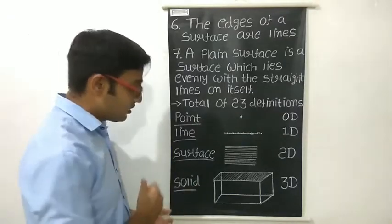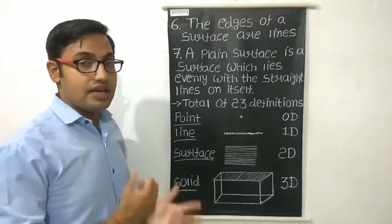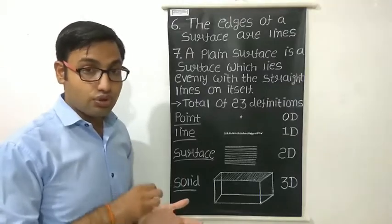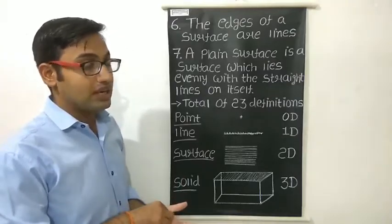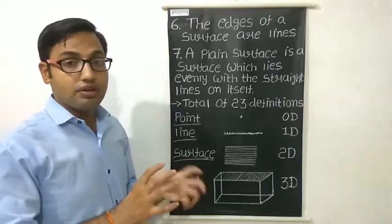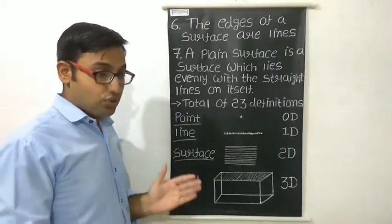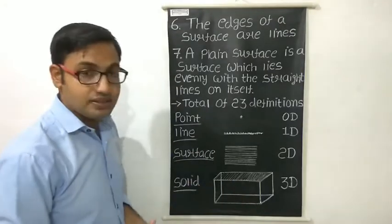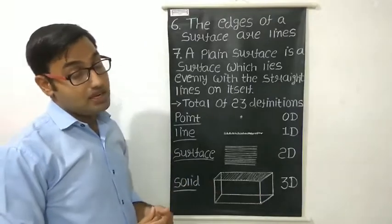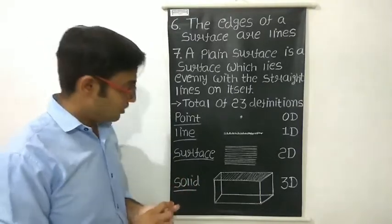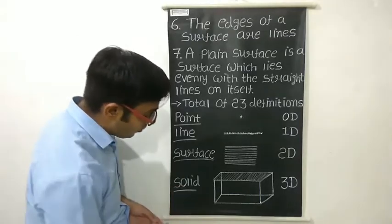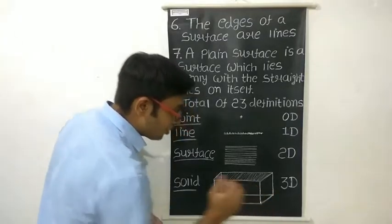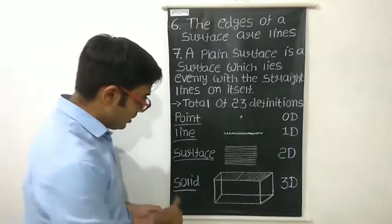The third important concept is a solid — a three-dimension figure. Examples include your water bottle or textbook, which is a cuboid, or a playing cube. A cuboid has three dimensions: length, breadth, and height. That is why it is called a 3D shape, and this is what we call a solid.